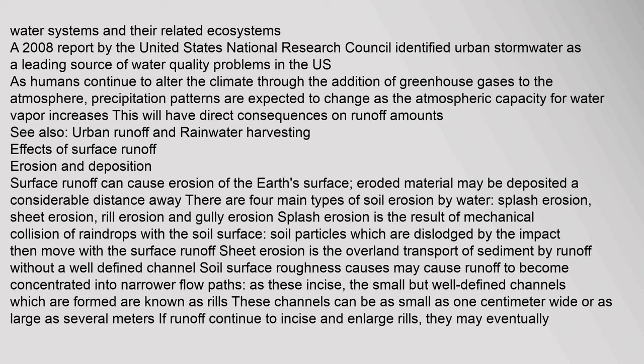A 2008 report by the United States National Research Council identified urban stormwater as a leading source of water quality problems in the U.S. As humans continue to alter the climate through the addition of greenhouse gases to the atmosphere, precipitation patterns are expected to change as the atmospheric capacity for water vapor increases. This will have direct consequences on runoff amounts.